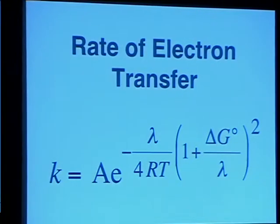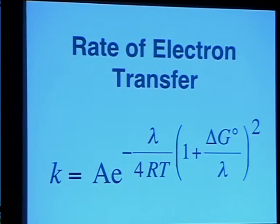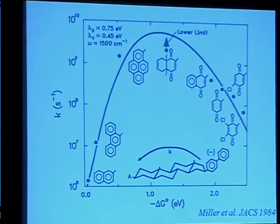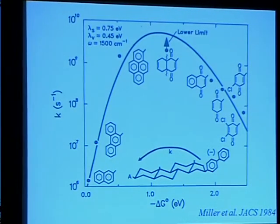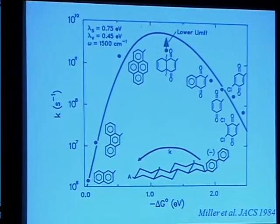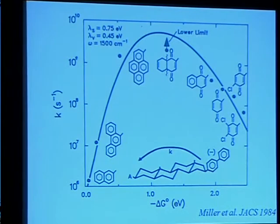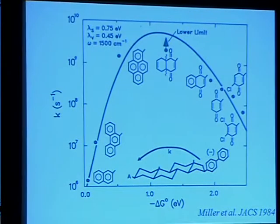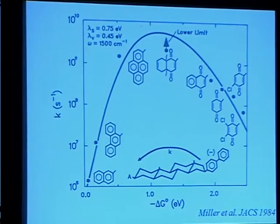This equation could be used to analyze different kinds of systems and make predictions about those different kinds of systems. It had a strange prediction. Most of its predictions, which are in the literature and have been tested, were verified. But this equation made a very unusual prediction for the first time for this type of reaction.